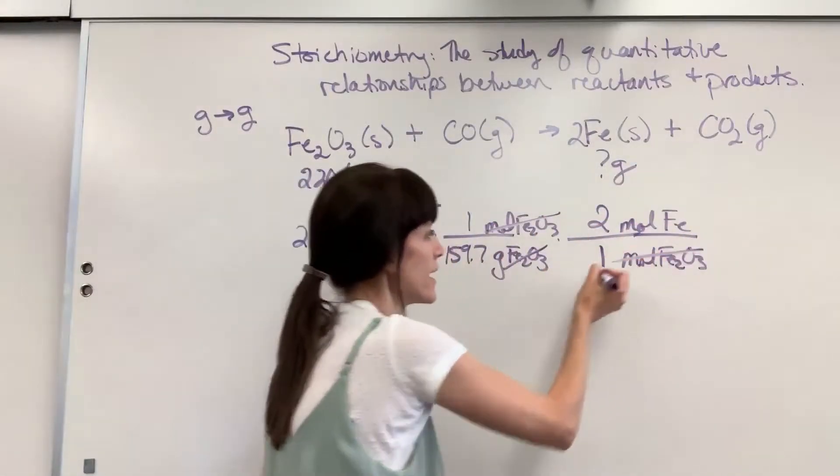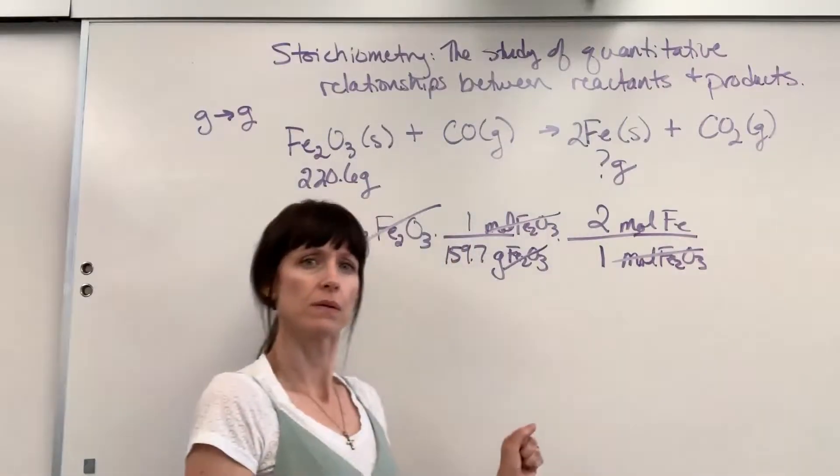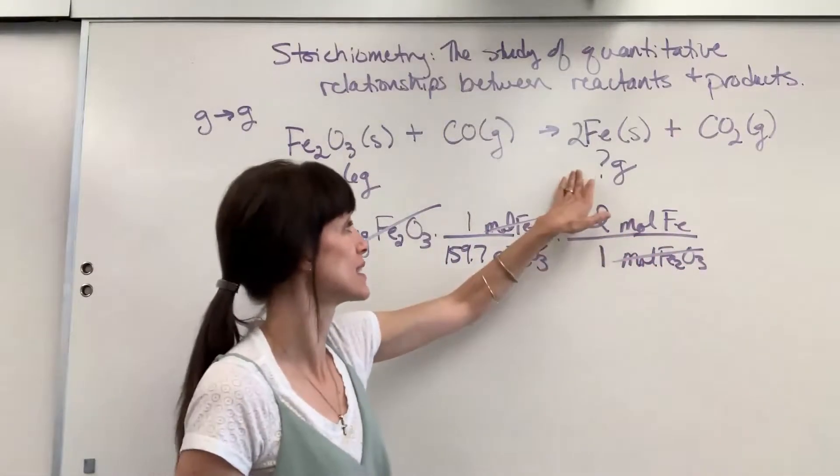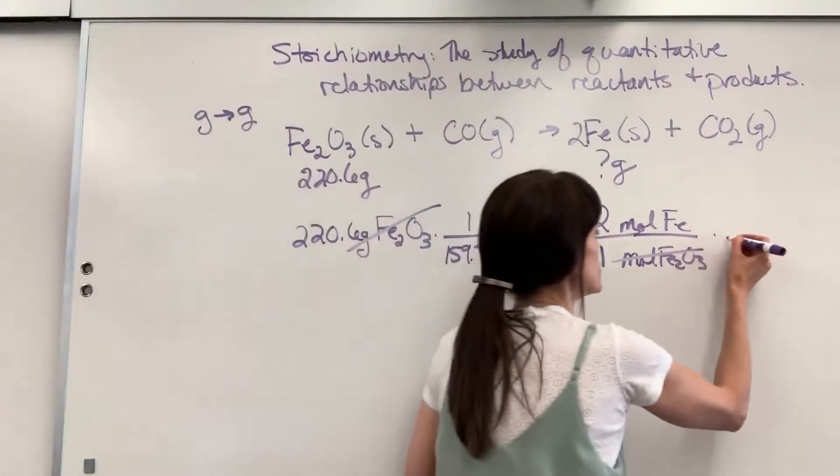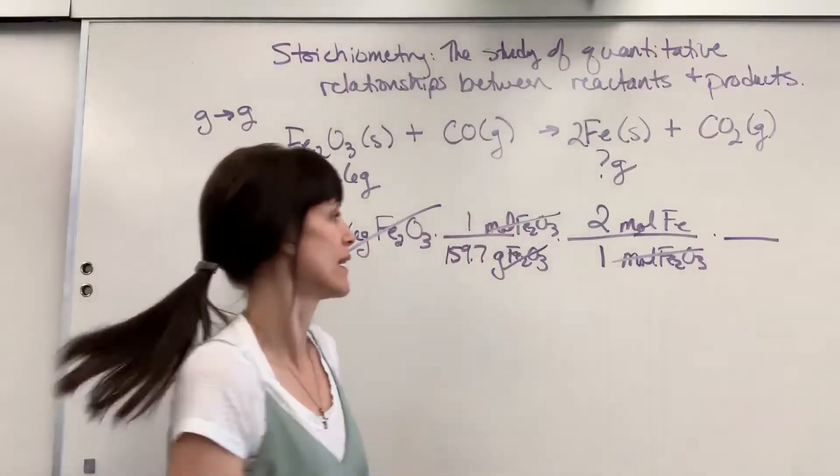So iron 3 oxide, gone. If I stopped right here, what would I have for my unit? Moles of iron. But we want grams. They want us to give grams. So we can just use molar mass to go from moles to grams of iron.